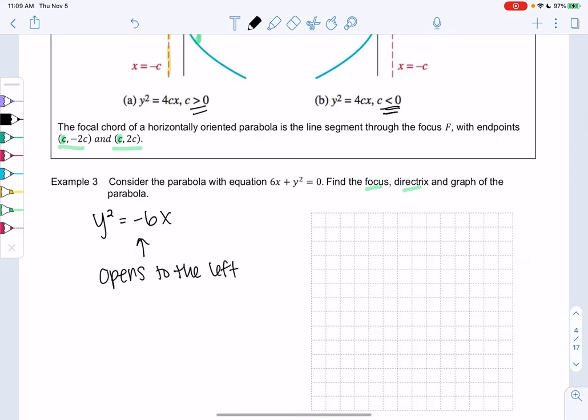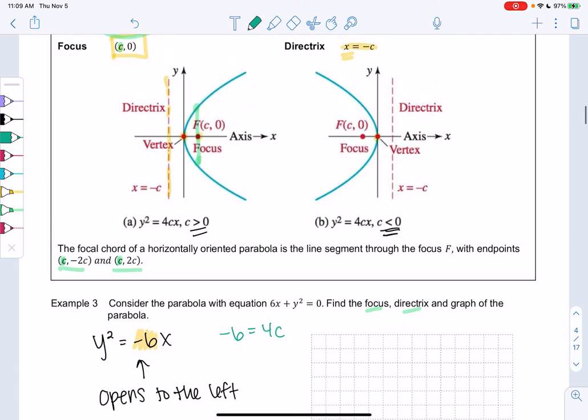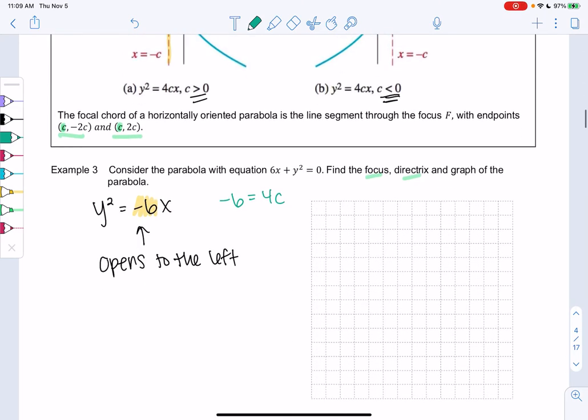So let's figure out exactly what c is. We know that -6 will equal 4c. That's just the way this will always be 4c. So we divide by 4, divide by 4. And so we divide them both by 2, and I get c is -3/2.